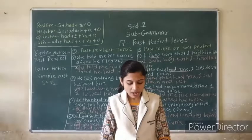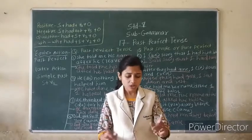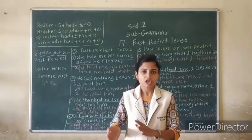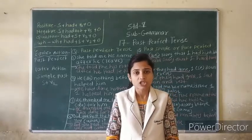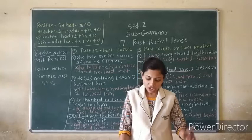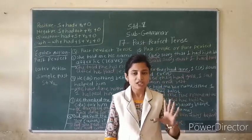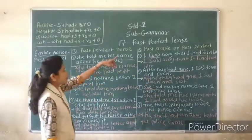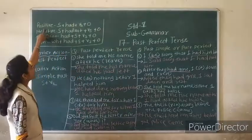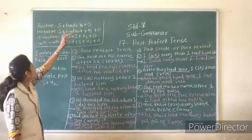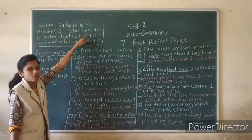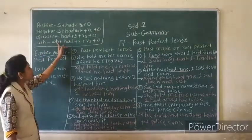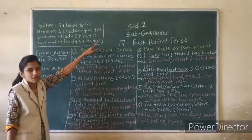Do you understand? Like this you are solving page number 44 and 45. Summary of formulas — Positive: Subject plus Had plus verb 3 plus Object. Negative: Subject plus Had Not plus verb 3 plus Object. Question: Had plus Subject plus verb 3 plus Object. WH Question: WH word plus Had plus Subject plus verb 3 plus Object.